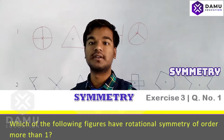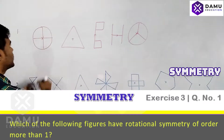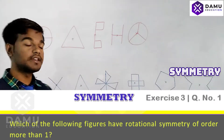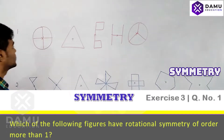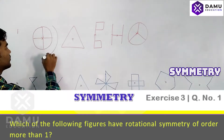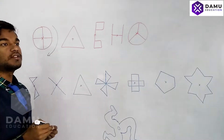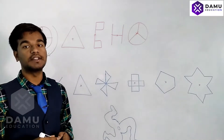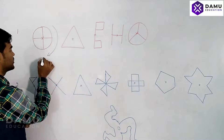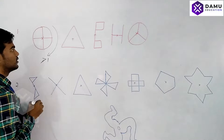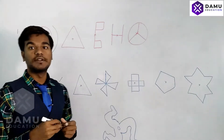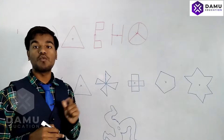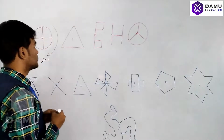For example, if we rotate a circle 360 degrees completely, it will have so many rotations. The order of rotation for a circle will be more than one — in fact, it has infinite rotational symmetry.